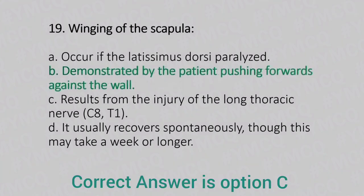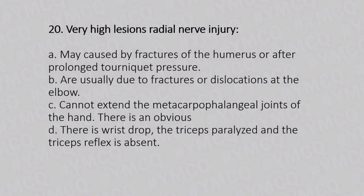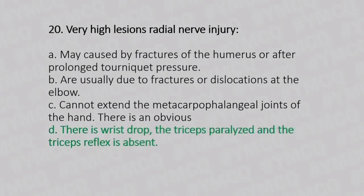Question number 20. Radial nerve injury. Option A: may cause fracture of the humerus or after prolonged tourniquet pressure. Option B: usually due to fracture or dislocation at the elbow. Option C: cannot extend the metacarpophalangeal joints of the hand. Option D: there is wrist drop, triceps paralyzed, and the triceps reflex is absent. And the answer is Option D, there is wrist drop, triceps paralyzed, and the triceps reflex is absent.